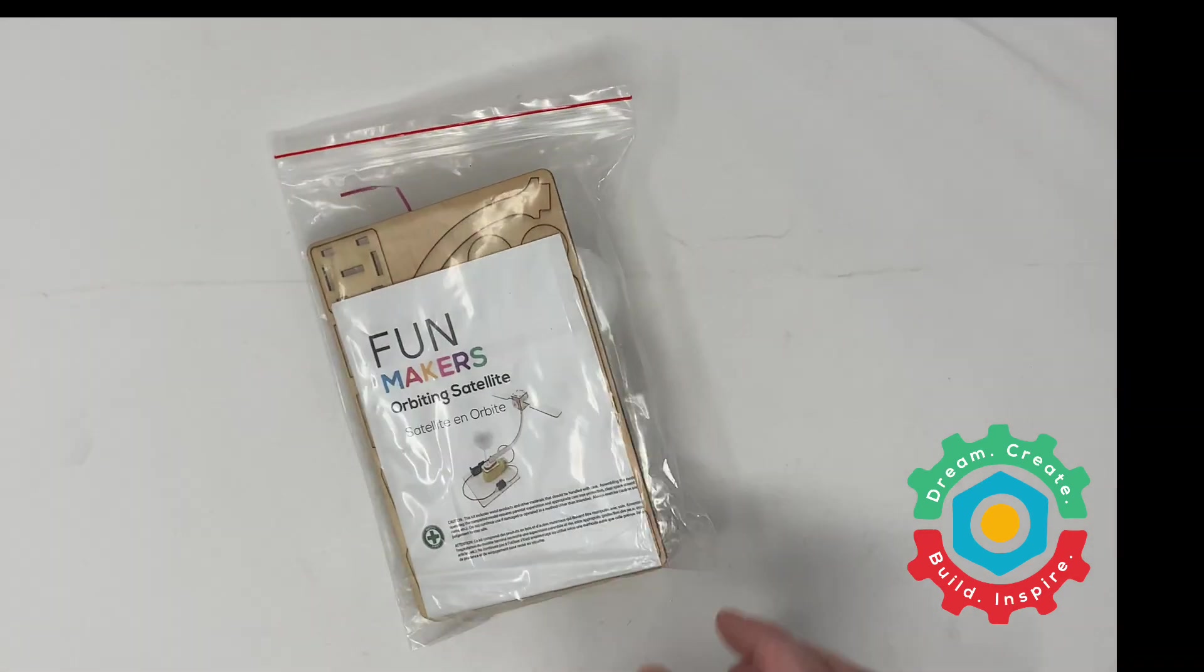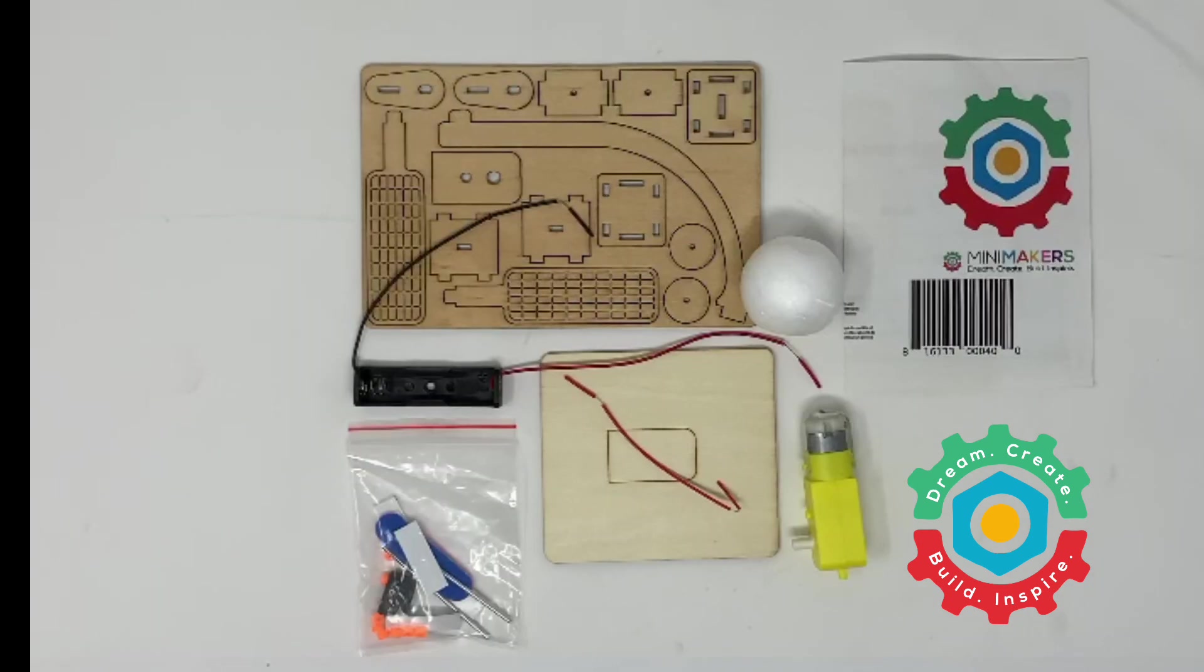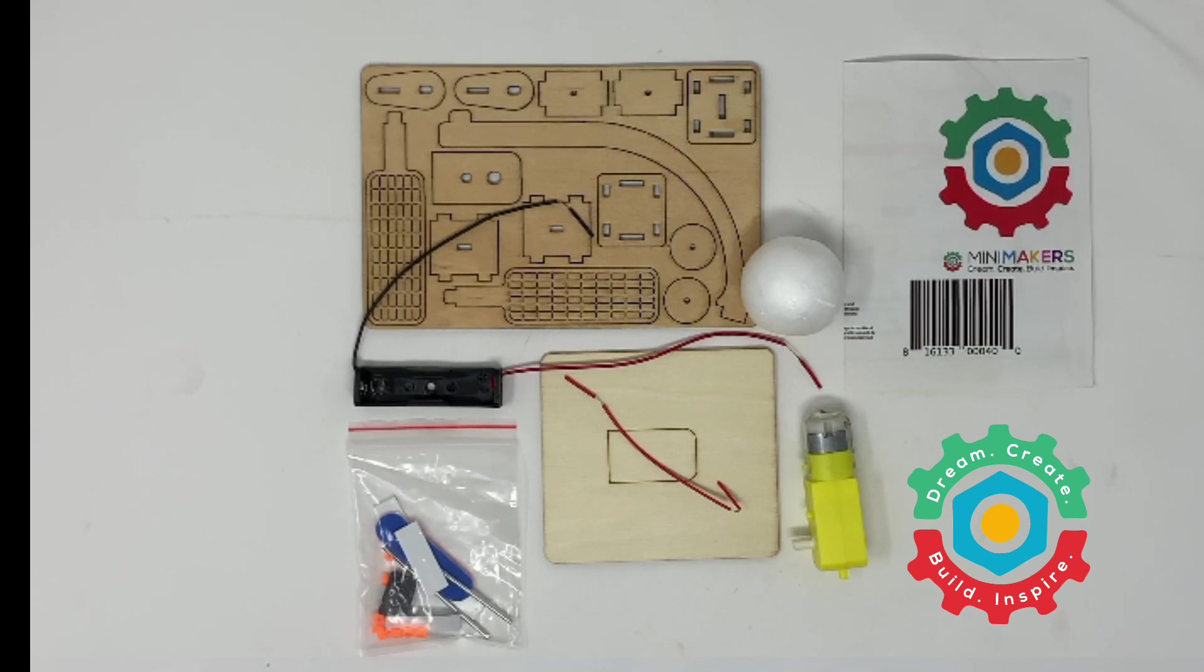The orbiting satellite pieces as they're laid out. You'll see that there is a single double-A battery, the styrofoam ball which is going to act as your celestial object that's being orbited, there is the laser cut main pieces.